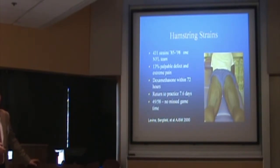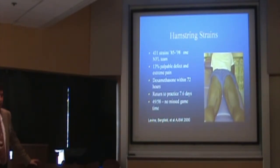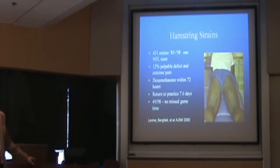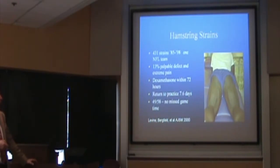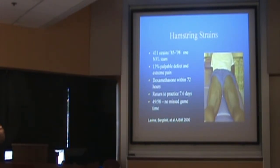The big problem is that once somebody gets a hamstring strain, they're probably going to get another one. If there was a localized area of tenderness, Dr. Birchfeld would give them a cortisone shot within 72 hours of the acute injury. His philosophy: the initial strain leads to an acute inflammatory response which is the majority of the pain. By quieting the inflammatory response, the guys could go back and play sooner — average return to practice in six to seven days, no games missed.